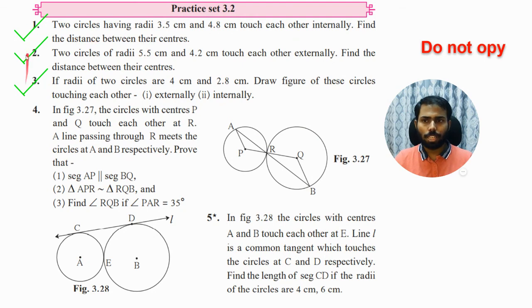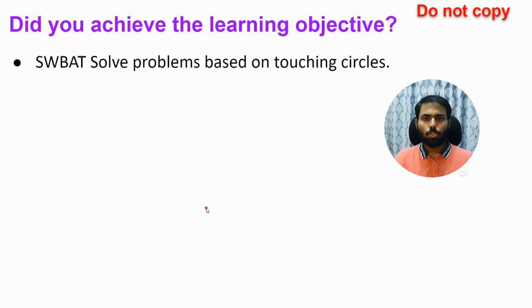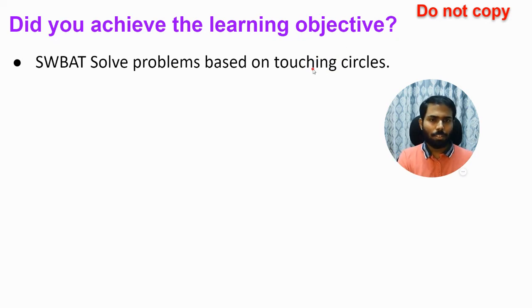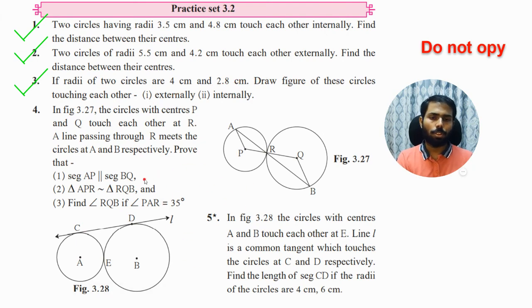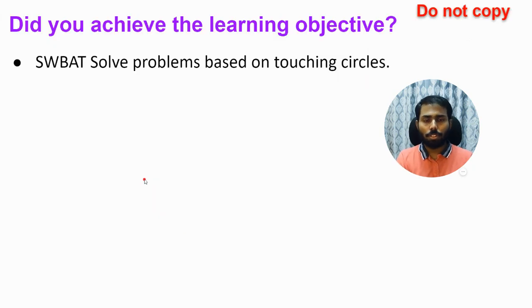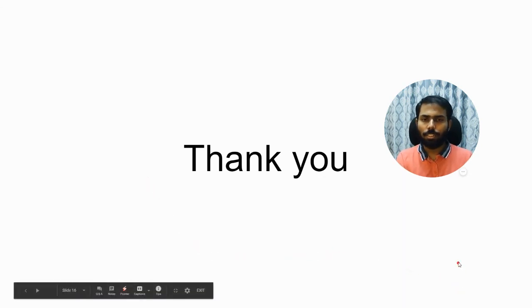We have completed the first three sums of Practice Set 3.2. Questions four and five are remaining and we'll cover those in the next learning session. Check whether you have achieved the learning objective — will you be able to solve problems based on touching circles? That's it for this learning session. I hope you understood everything and had fun drawing the two touching circles. We'll see each other in the next learning session.